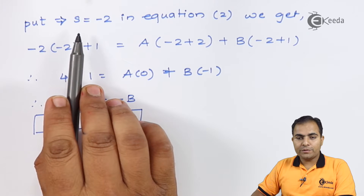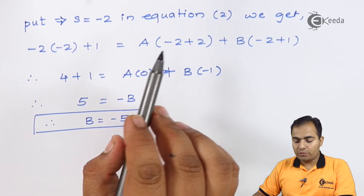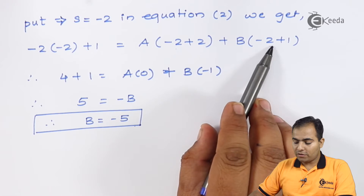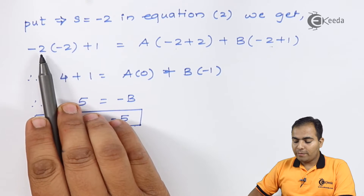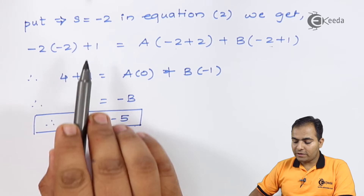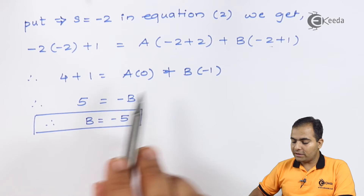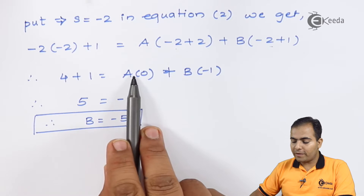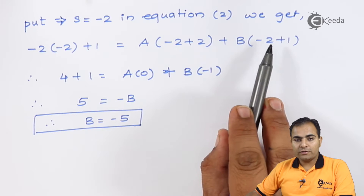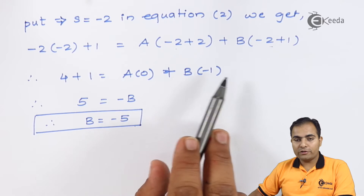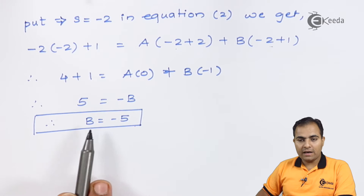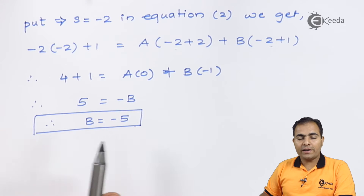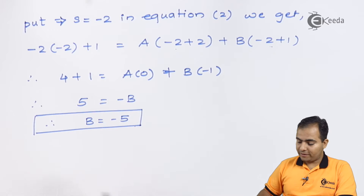Substituting s = -2 into equation number two: on the left-hand side, -2(-2) + 1 = 4 + 1 = 5. The (s+2) term becomes zero, so the A product vanishes. For B: (-2 + 1) = -1, so B × (-1) = 5, giving B = -5. Now substitute A = 3 and B = -5 back into equation number one.